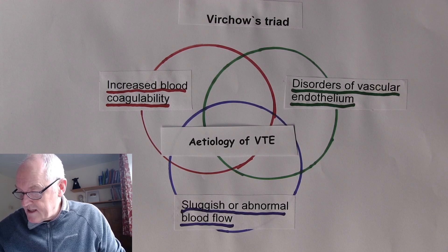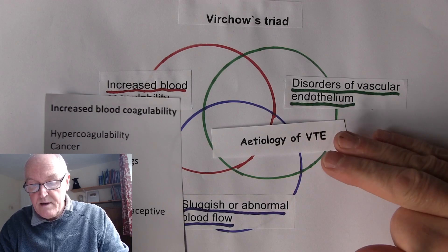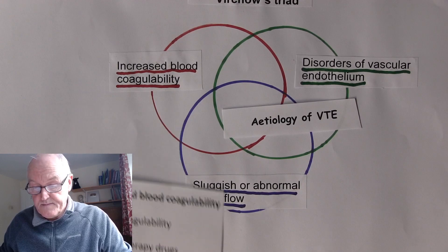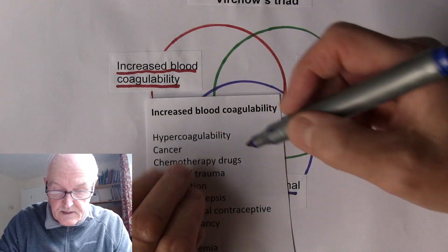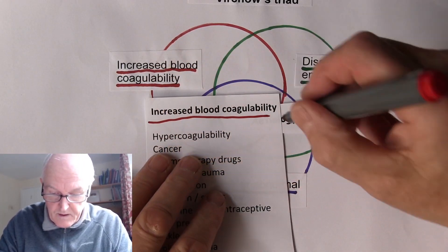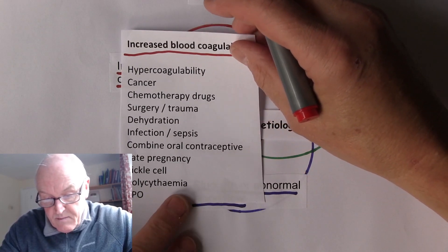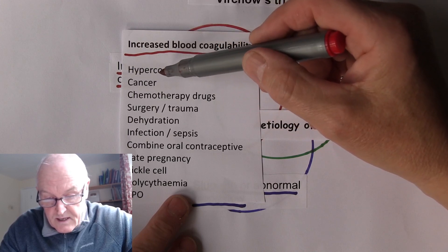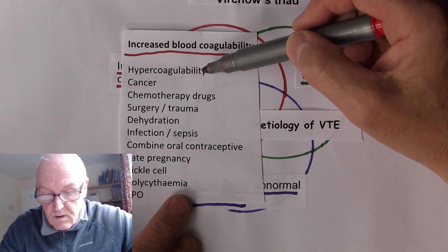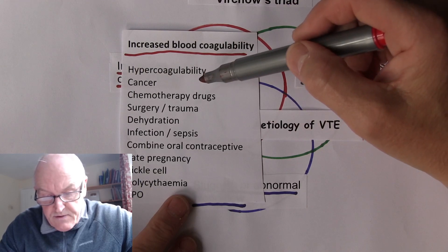First, we'll look at increased coagulability of the blood as part of the causation of venothromboembolism. This is called hypercoagulability — hyper just means high — so the blood is more likely to coagulate than normal, more likely to clot than normal. And there are different reasons for this.